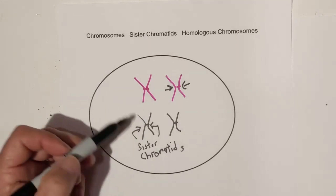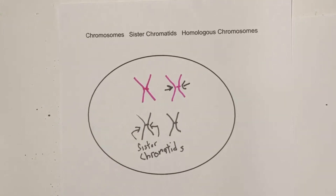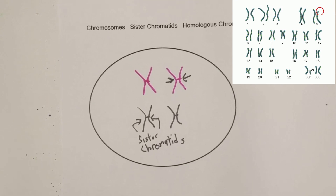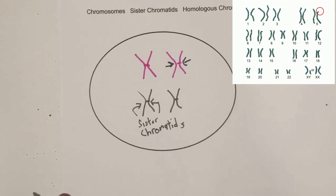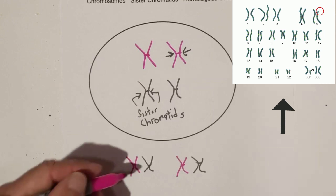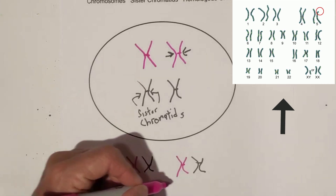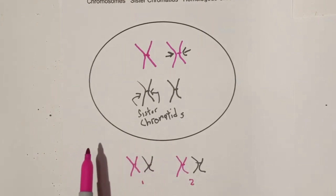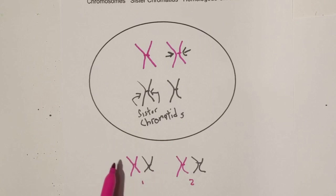Now, you can create a karyotype — what they do is basically freeze prophase, then start rearranging the chromosomes, stain them, and you get something that looks like this. This would be chromosome one and two, and you have two pairs of chromosomes that are similar but not exact.